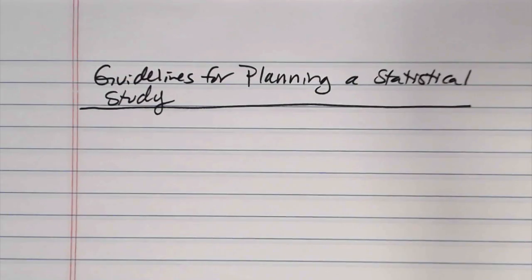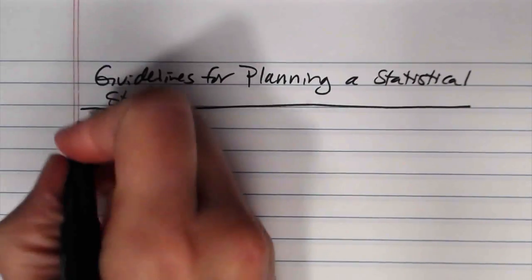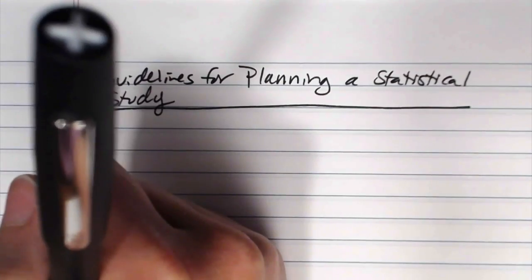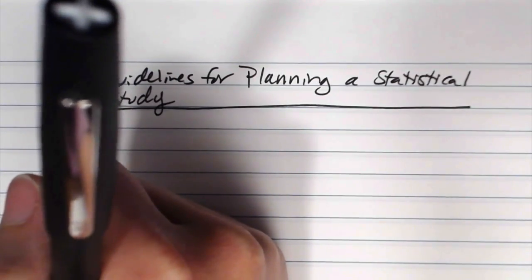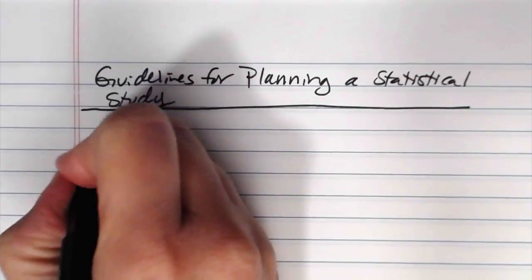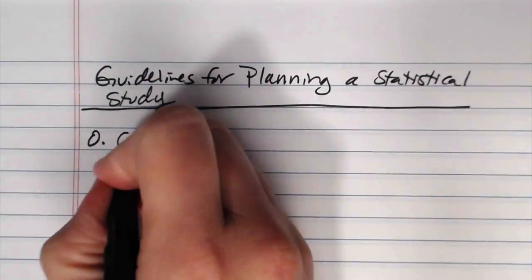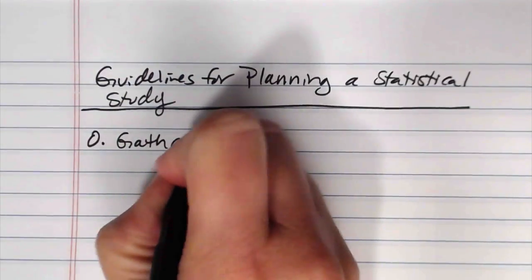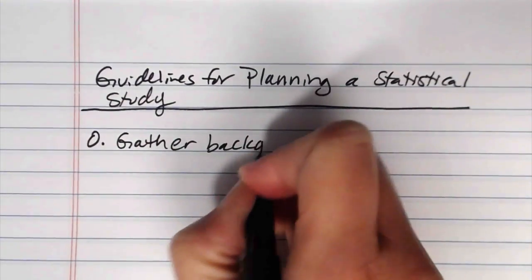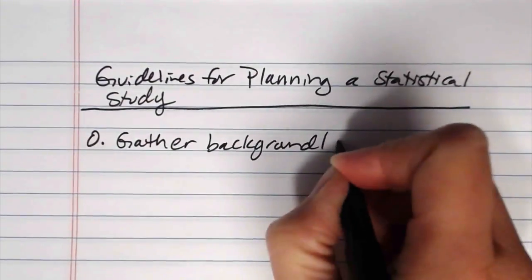I'm going to include a step or two that's not actually listed in the book's discussion. The book, if I remember correctly, numbers the guidelines one through seven, but I think there should actually be a step zero when you are planning a statistical study, a thing that you do before you really do anything else. And that is to gather background and context.